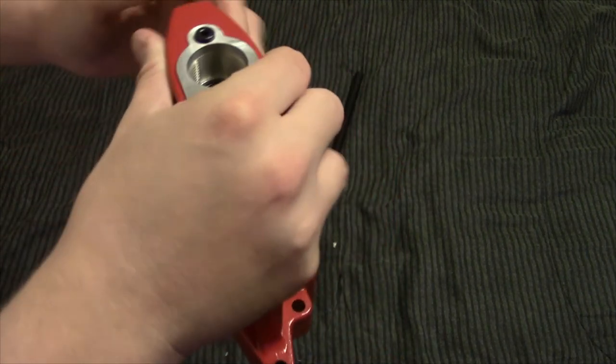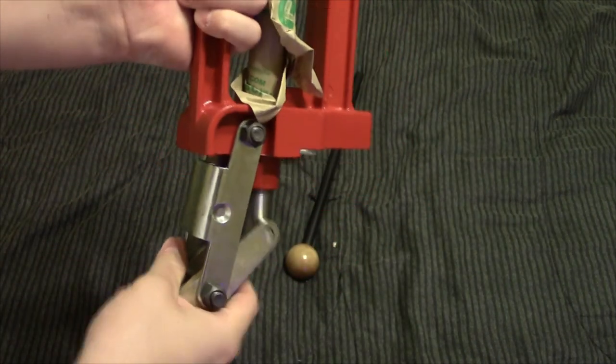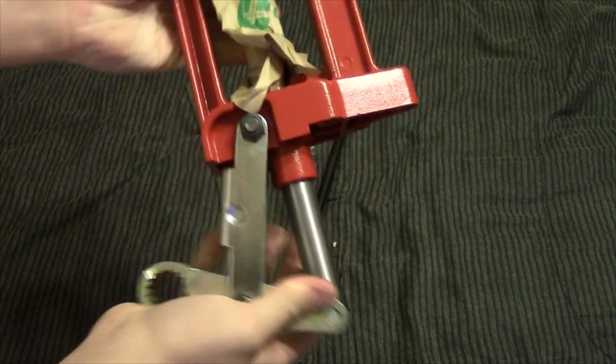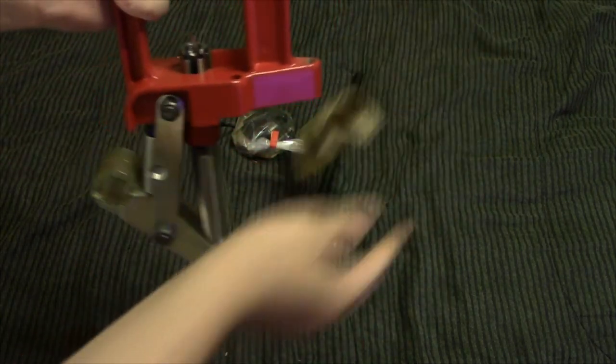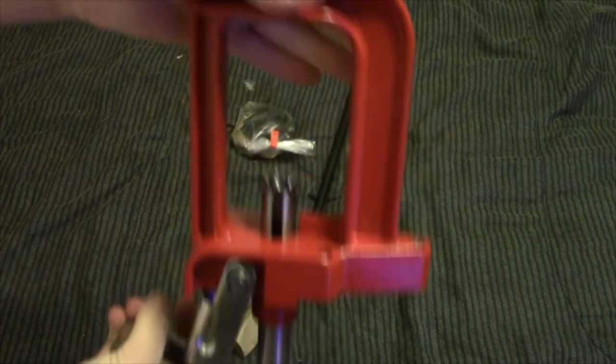So here's the main body of the press. It's got a little cardboard thing protecting the ram.